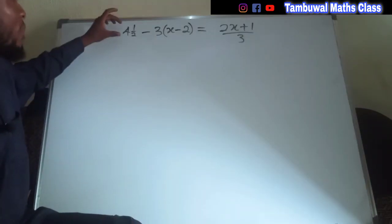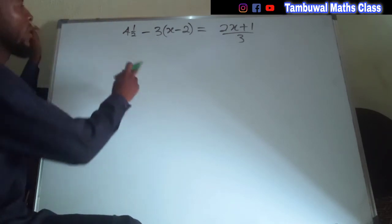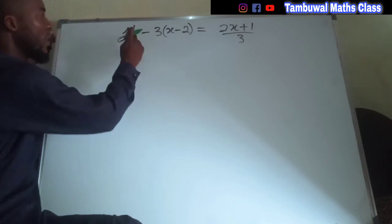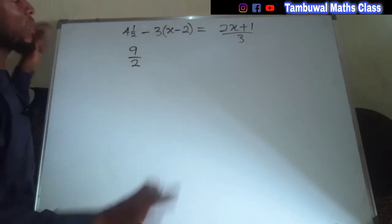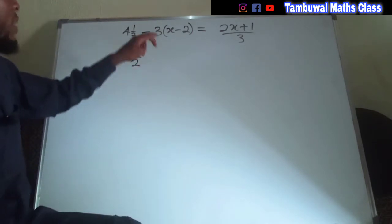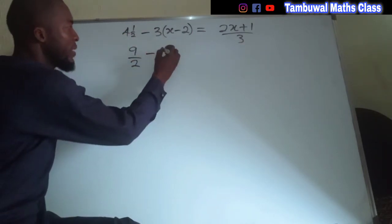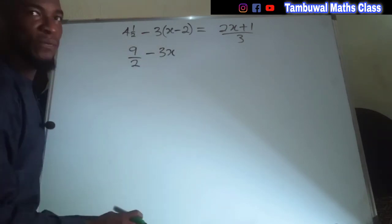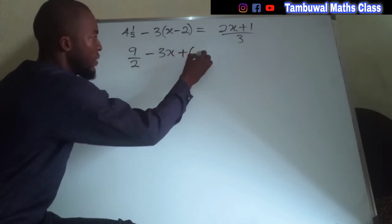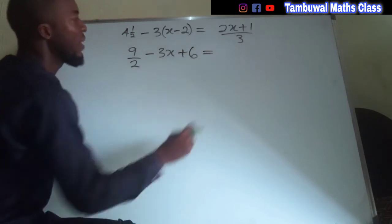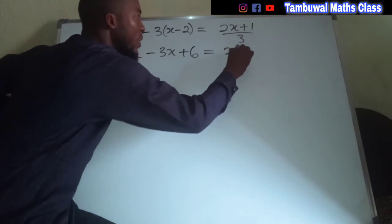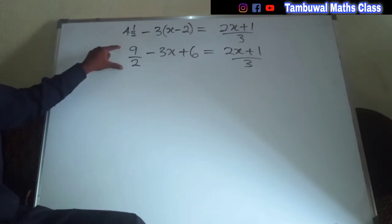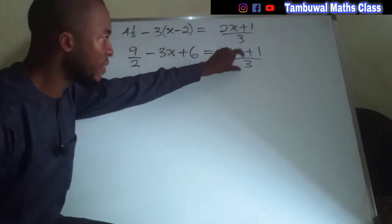Now let us look at the third example. First, let us transform the mixed fraction into an improper fraction: 2 times 4 is 8, plus 1 is 9, over 2. We can also expand the bracket: negative 3 times x is negative 3x, and negative 3 times negative 2 is positive 6. The whole of this equals (2x plus 1) divided by 3. The only fractions we have are 9 over 2 and (2x plus 1) divided by 3.